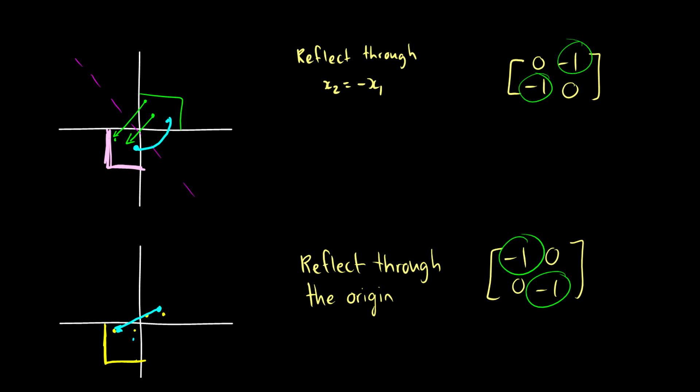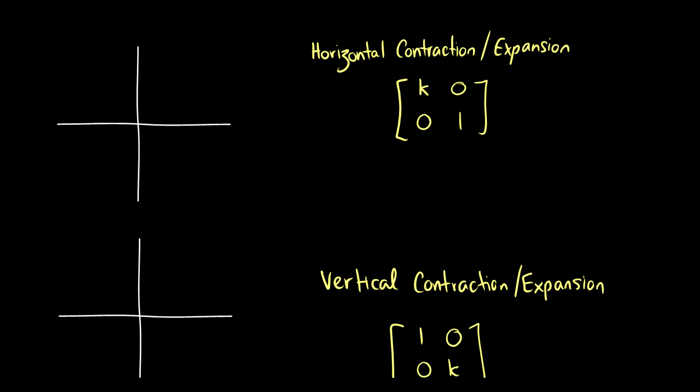You can do this on Wolfram Alpha, I believe, and you can put in the vector matrix and see what happens with reflections. That'll help you visually. Okay, so that's reflections.